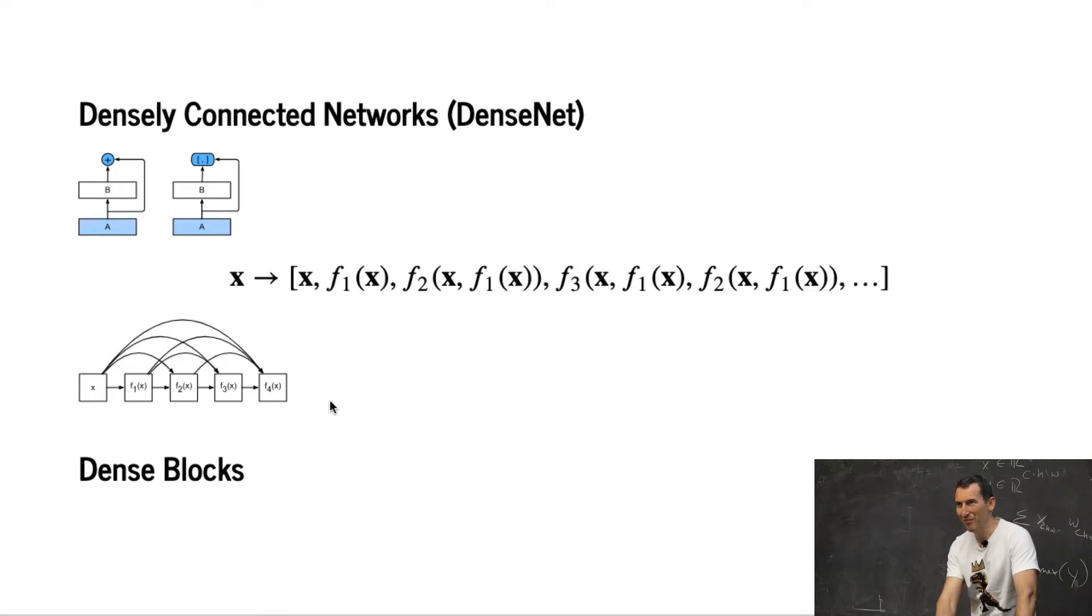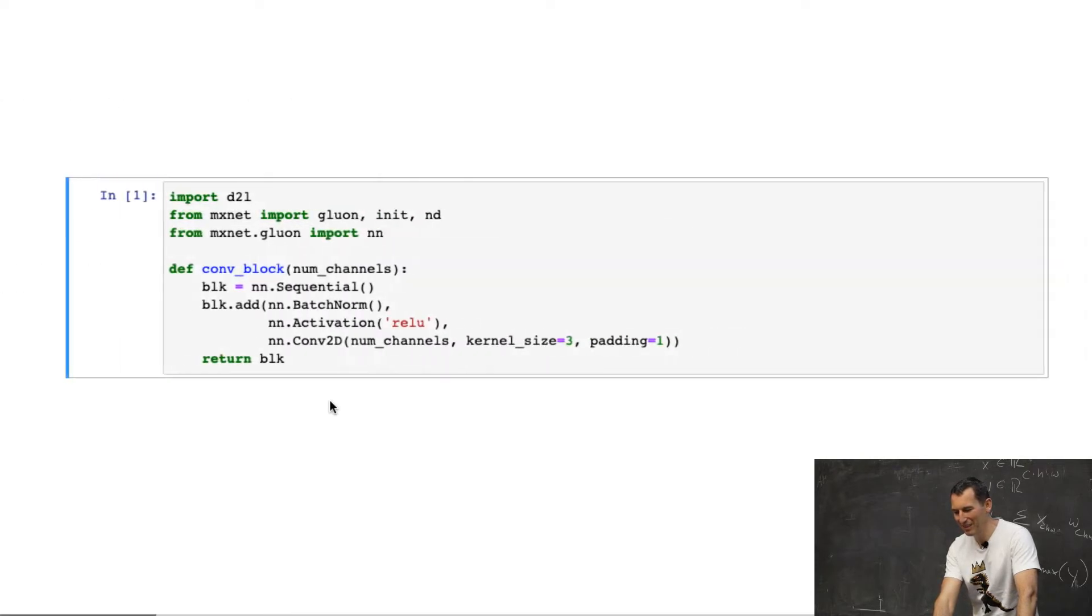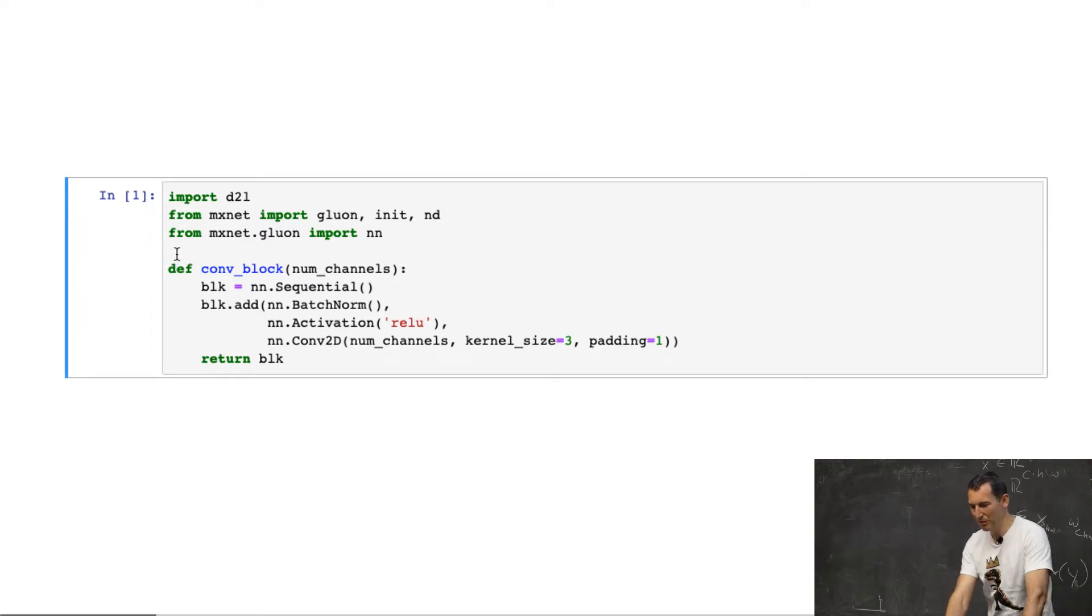So, there's the diagram. Let's see how we actually would go and code that up in Python. I have a convolutional block, and what I'm doing is just a simple one, adding batch norm activation and the 2D convolution. This is just a simple object.